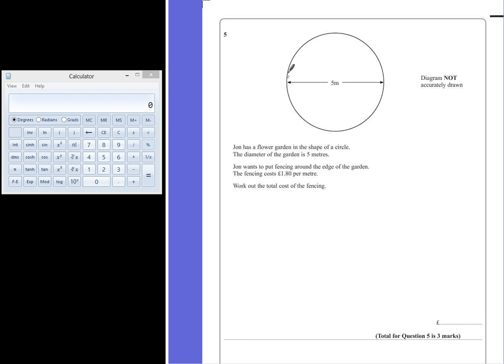Now if we want the distance around the outside of this circular garden, we're going to use a formula that's not given to us. And this is that the circumference of a circle is given by multiplying pi and the diameter.